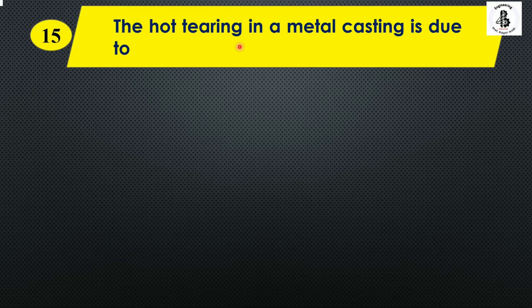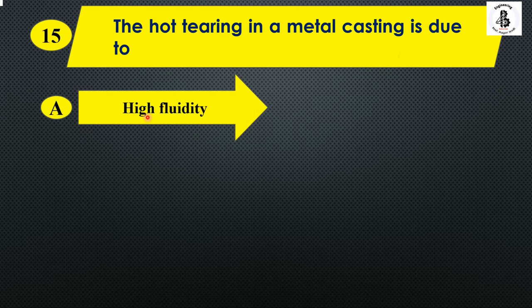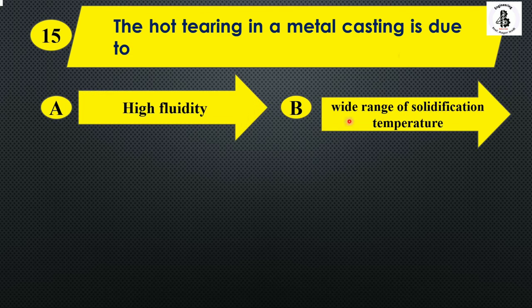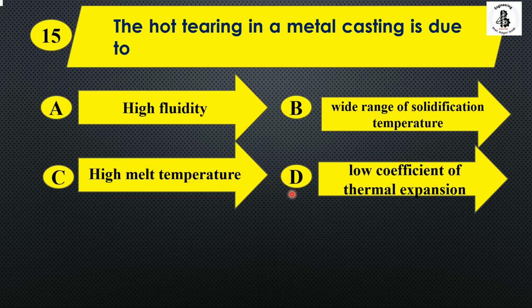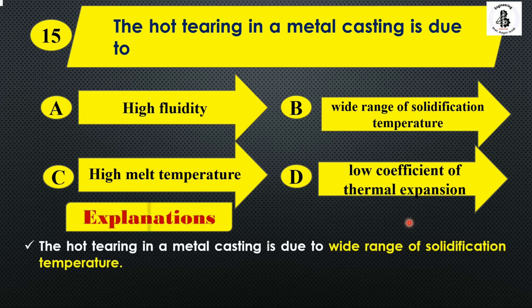The hot tearing in a metal casting is due to: Option A: high fluidity, Option B: wide range of solidification temperature, Option C: high melt temperature, and Option D: low coefficient of thermal expansion. Hot tearing in metal castings is due to the wide range of solidification temperature. So the right answer is Option B.